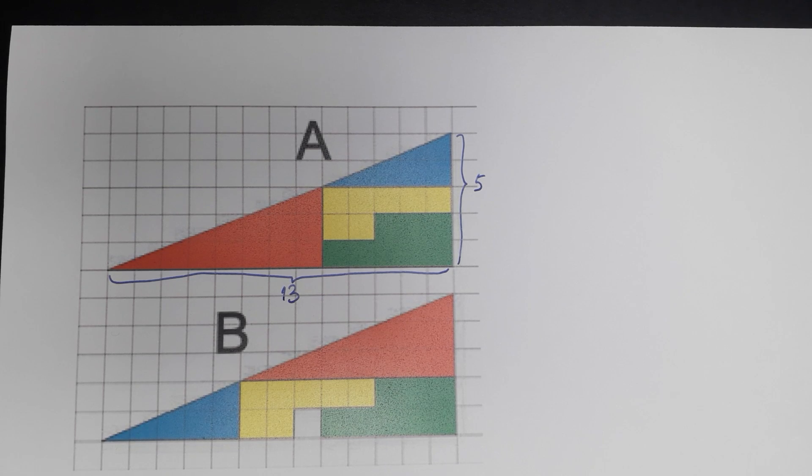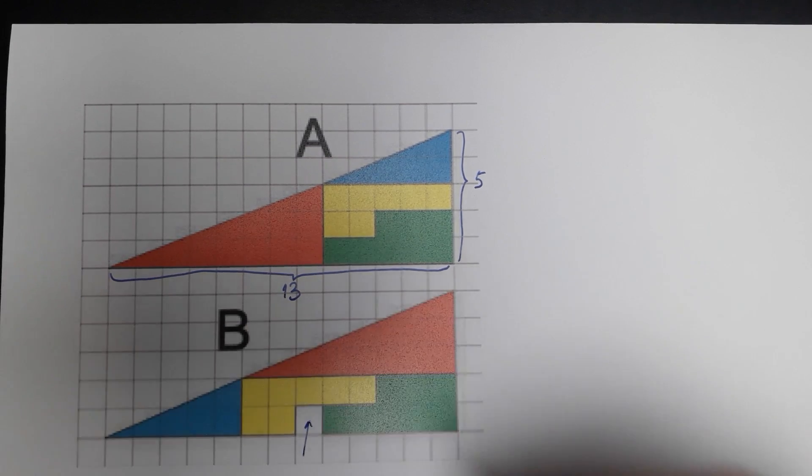In the animation, blue and red pieces have swapped and yellow and green pieces have been rearranged. And all of a sudden you have the same 5 by 13 triangle but now there is a hole, this missing piece right here.